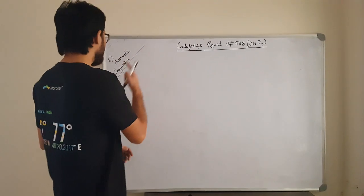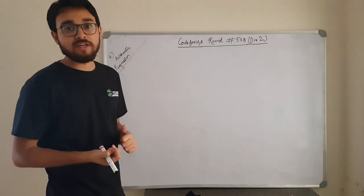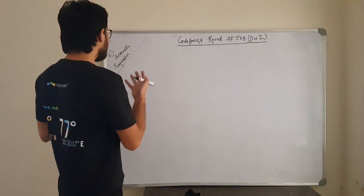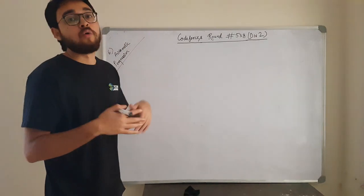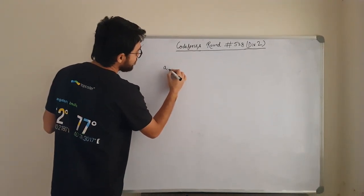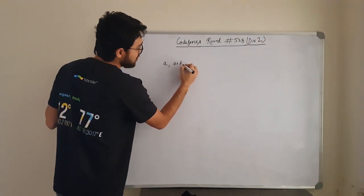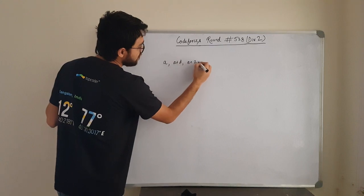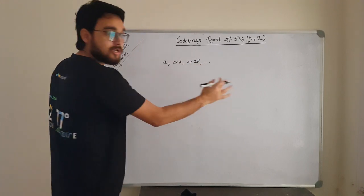Today we will be discussing problem E from Codeforces round 538. The problem is arithmetic progression. What is an arithmetic series? Basically, if you have a series of this form: a, a plus d, a plus 2d, this is an arithmetic series.